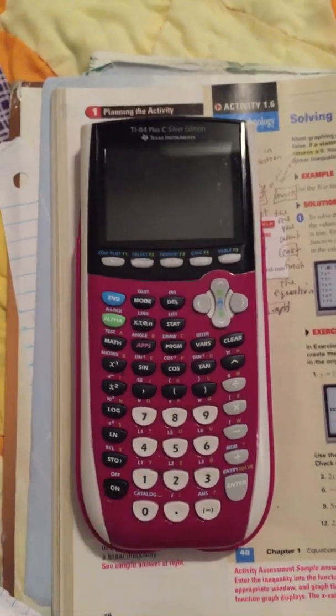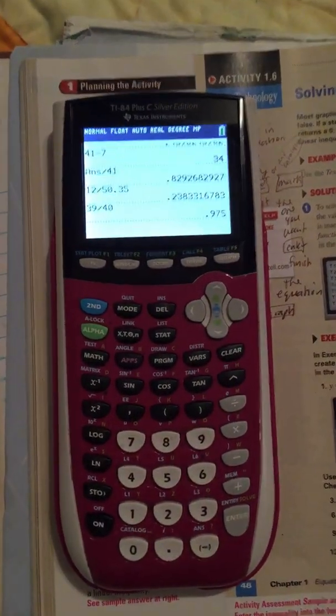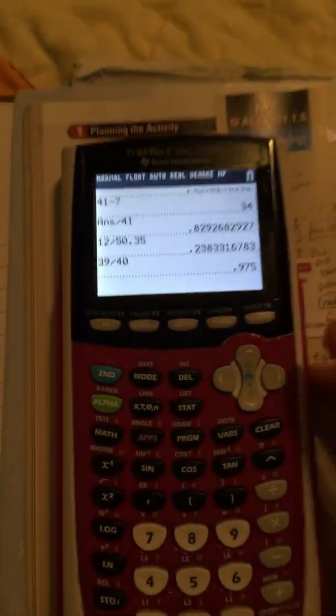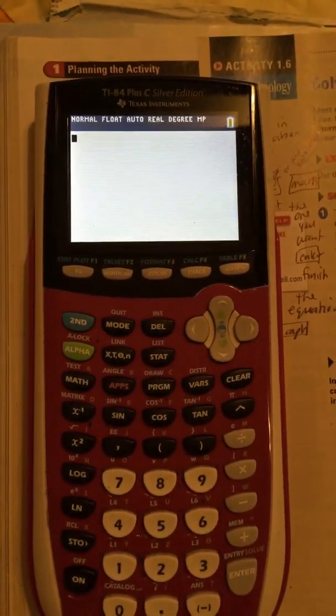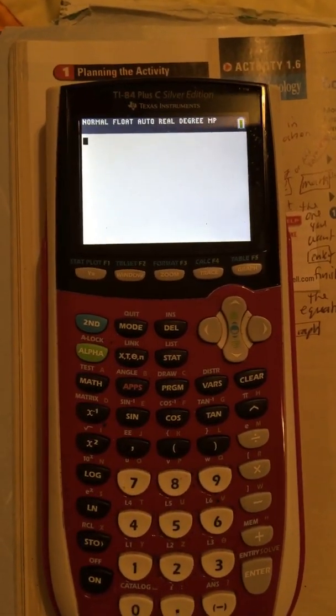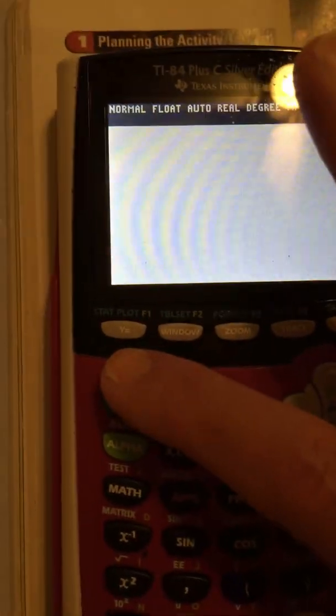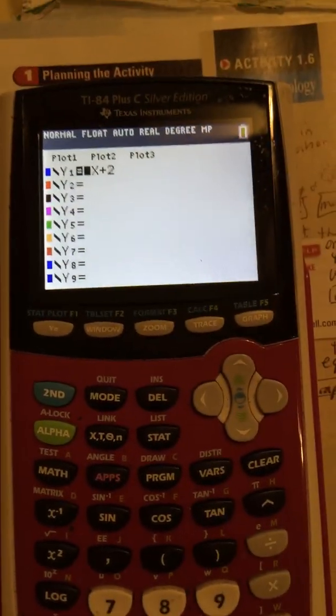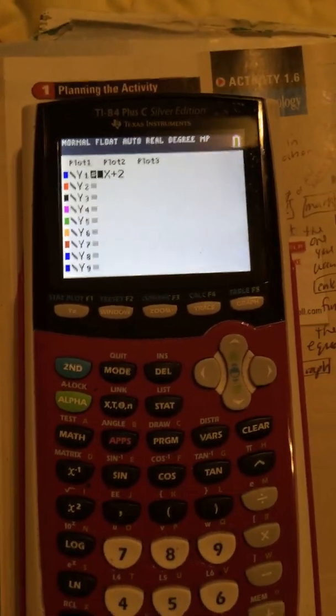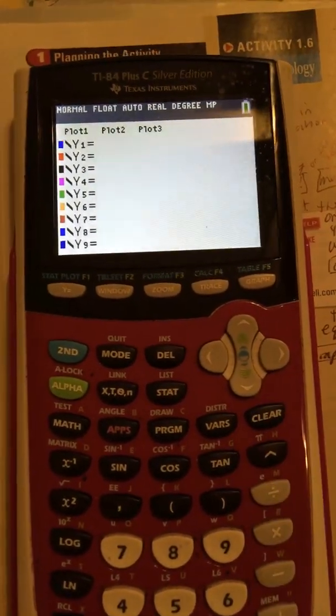Alright, so first we turn it on. More fun with sound effects. Next we're going to, I just want to clear that out, that's messy. Now we're going to put our inequality into Y equals. So the Y equals button is right there. We press it. Well, I've got some stuff in there, so I'm going to clear out what's in there.